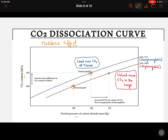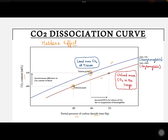We have two points here: one blue line, which is the venous point, and a red one, which is the arterial point. On the x-axis, we have the partial pressure of carbon dioxide in millimeters of mercury. On the y-axis, we have the CO2 content in ml per 100ml. At the arterial point, pCO2 is around 40 mmHg, and at the venous point, pCO2 is around 46 mmHg.